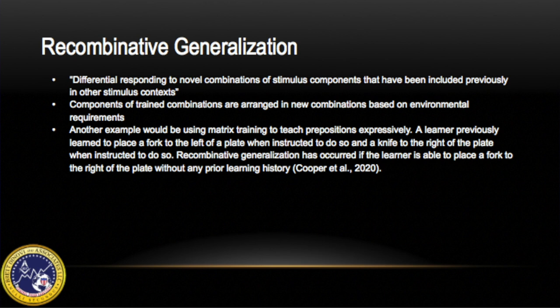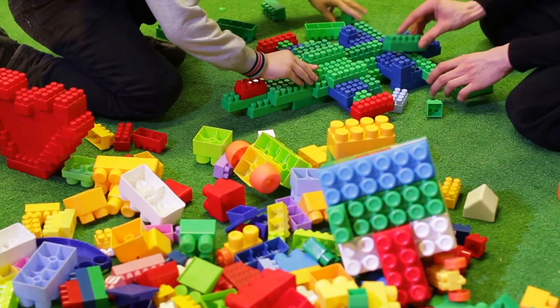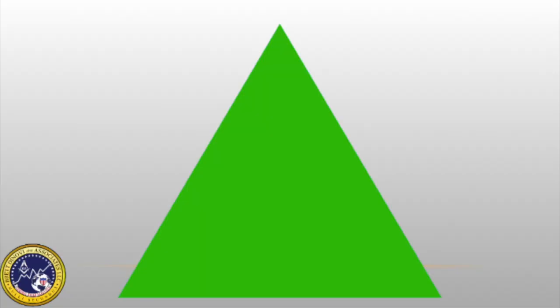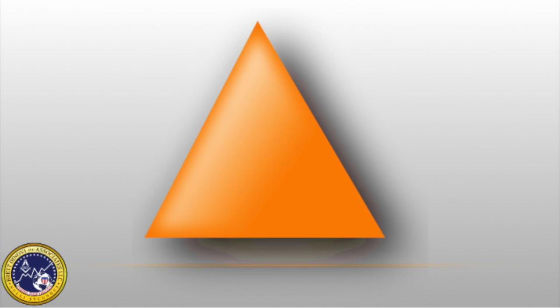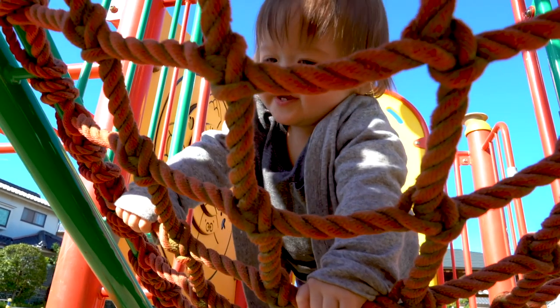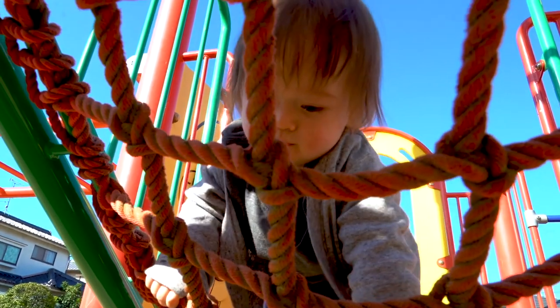Recombinative generalization is defined as the differential responding to novel combinations of stimulus components that have been included previously in other stimulus contexts. The components of trained combinations are arranged in new combinations based on environmental requirements. For example, a learner previously learned to respond 'green triangle' in the presence of a green triangle, and 'orange square' in the presence of an orange square. Without any prior learning history, when presented with an orange triangle, the child was able to respond 'orange triangle.' If a child is able to accurately respond to 'orange triangle' without a prior learning history, recombinative generalization has occurred.